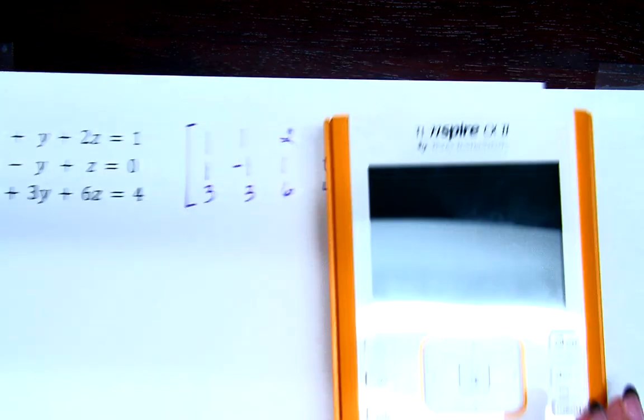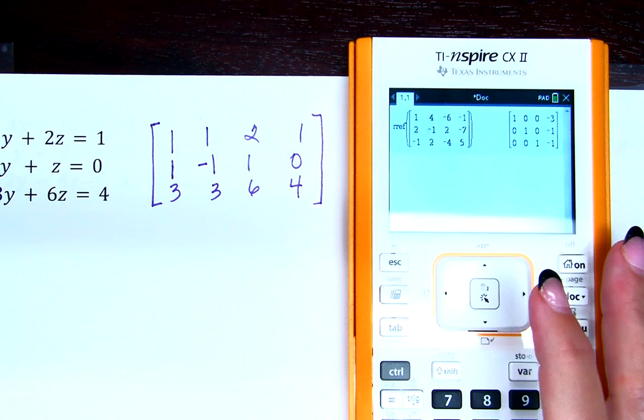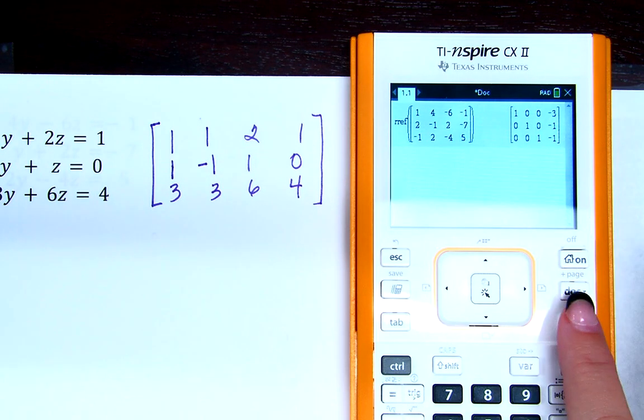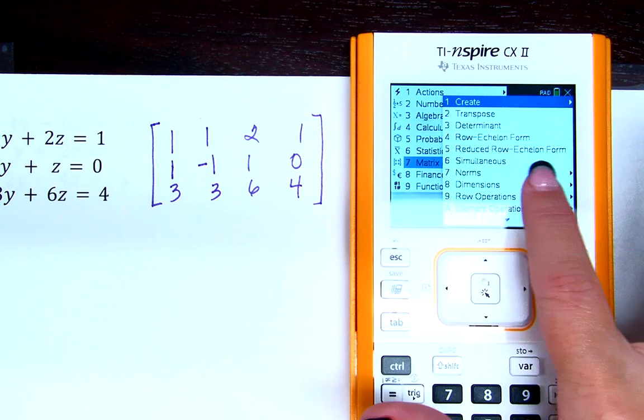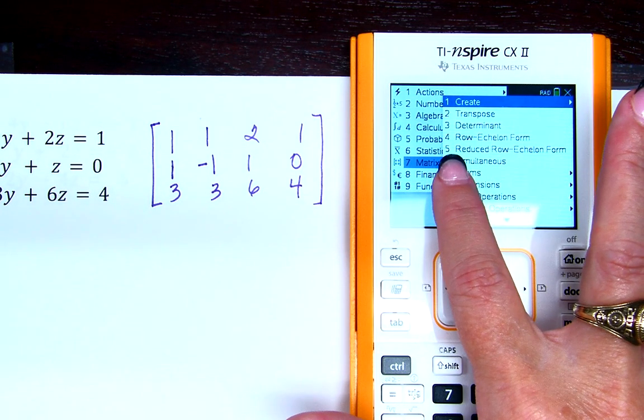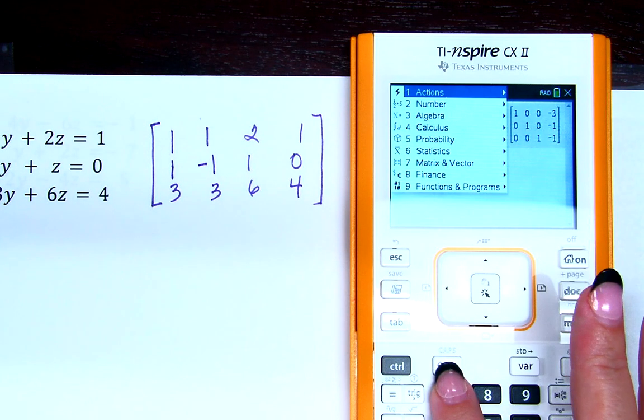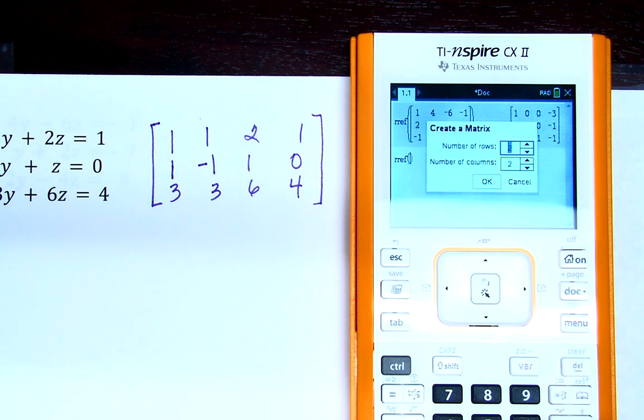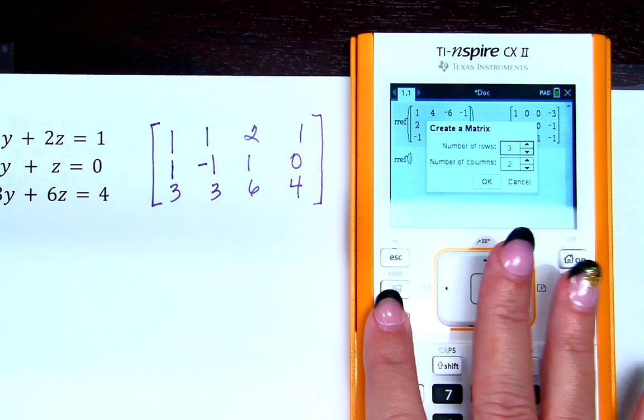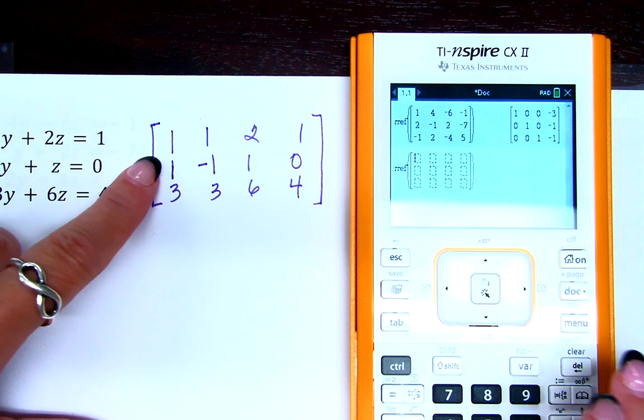So then I'm going to go in my calculator. You have your notes of what to push, right? Can you think about it? Can you remember it? Menu, matrix, reduced row echelon first, right? So do that first. Now menu, matrix, create a matrix. How many rows will it have? Three. And how many columns? Four.